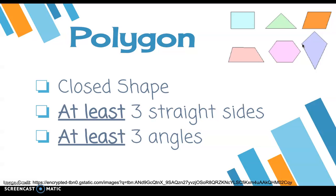Next we're going to look at the word polygon. A polygon is any shape that is closed and has at least three straight sides and at least three angles — that means it could have more than three. If you look in the top right corner, you'll see a few examples of polygons: a square, trapezoid, triangle, hexagon, parallelogram, and kite.